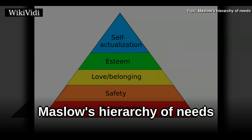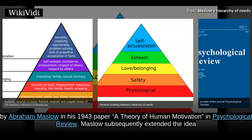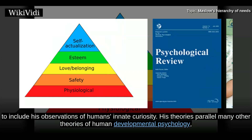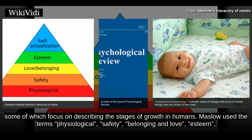Maslow's Hierarchy of Needs is a theory in psychology proposed by Abraham Maslow in his 1943 paper 'A Theory of Human Motivation' in Psychological Review. Maslow subsequently extended the idea to include his observations of humans' innate curiosity. His theories parallel many other theories of human developmental psychology, some of which focus on describing the stages of growth in humans.